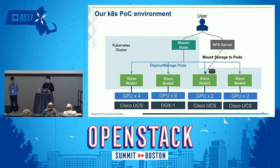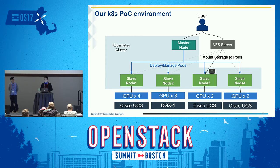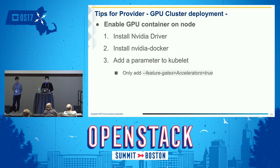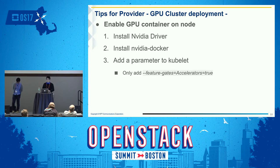Our Kubernetes cluster architecture has five nodes: one master and four GPU slave nodes. Users control the cluster from their local machine or by logging into the master node. We also provide an NFS server as external storage. To enable GPU containers, we need to do three things on each slave node: first, install the NVIDIA driver; second, install NVIDIA Docker; and third, run Kubernetes with a specific parameter.